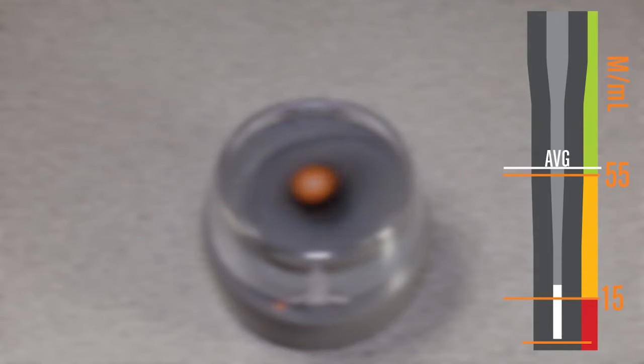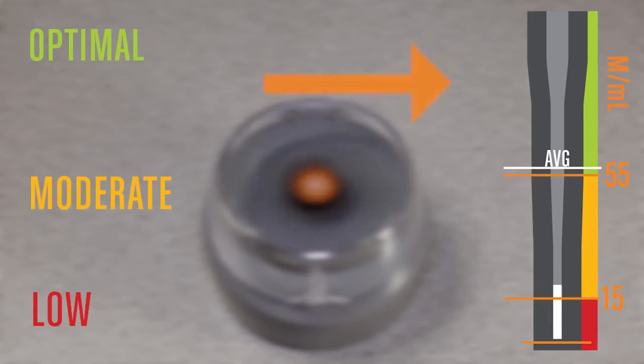Your results will appear as a white pellet at the end of the prop, indicating whether you have a low, moderate, or optimal sperm count.